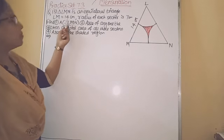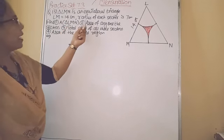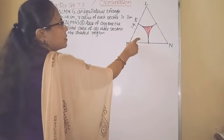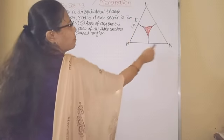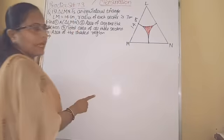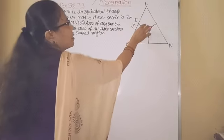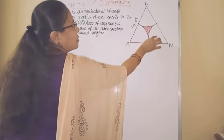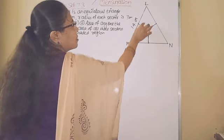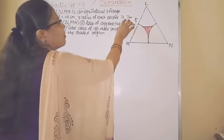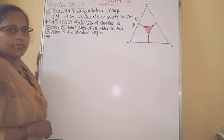LM is equal to 14 cm and radius of each sector is 7 cm. Triangle LMN is an equilateral triangle with side 14 cm and the triangle is divided here in 3 sectors. All these 3 sectors have equal radius 7 cm.